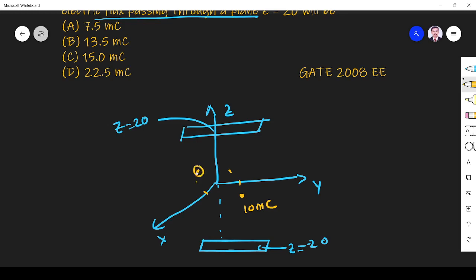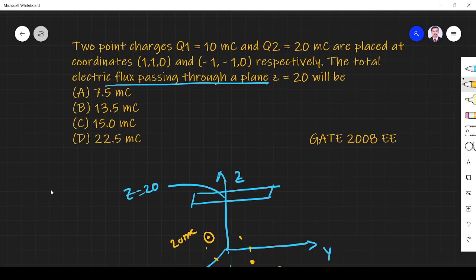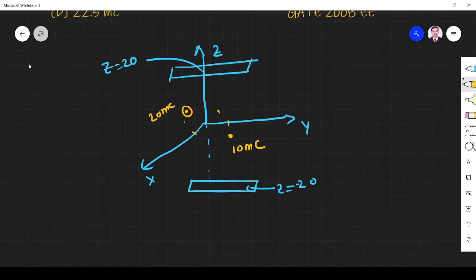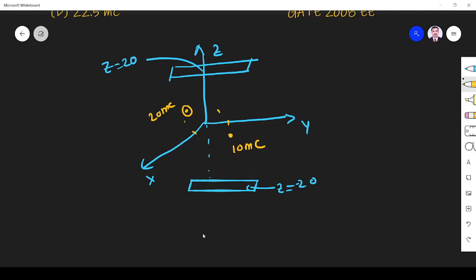This is the 20 millicolum. So what they are asking? They are asking electric flux passing through a plane. Flux passing through is given by charge enclosed.